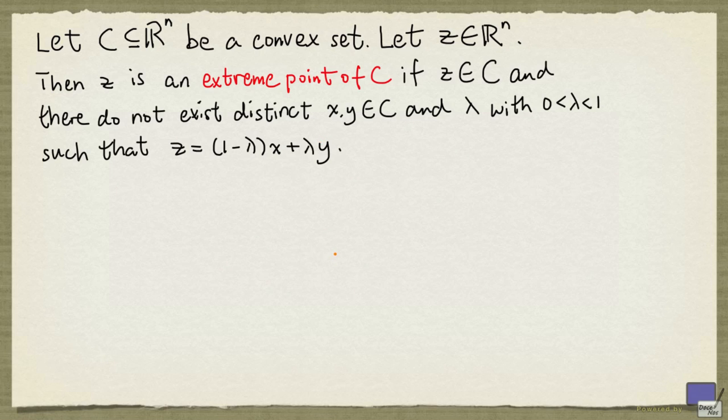But it would be a mistake to think that extreme points are always sharp corners. For example, if you look at the unit disk, every point on the boundary is an extreme point. It takes a bit of algebra to show this, but it can be done.